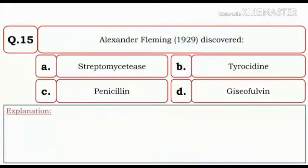And the last question is, Alexander Fleming in 1929 discovered streptomycetes, tyrocidine, penicillin, and griseofulvin. So here the correct option would be penicillin.